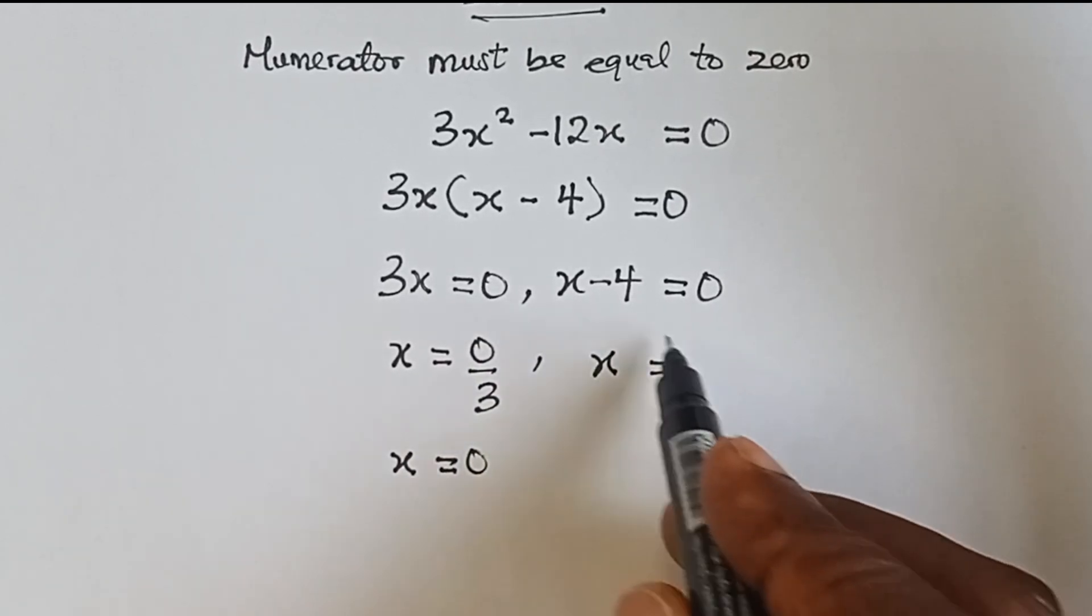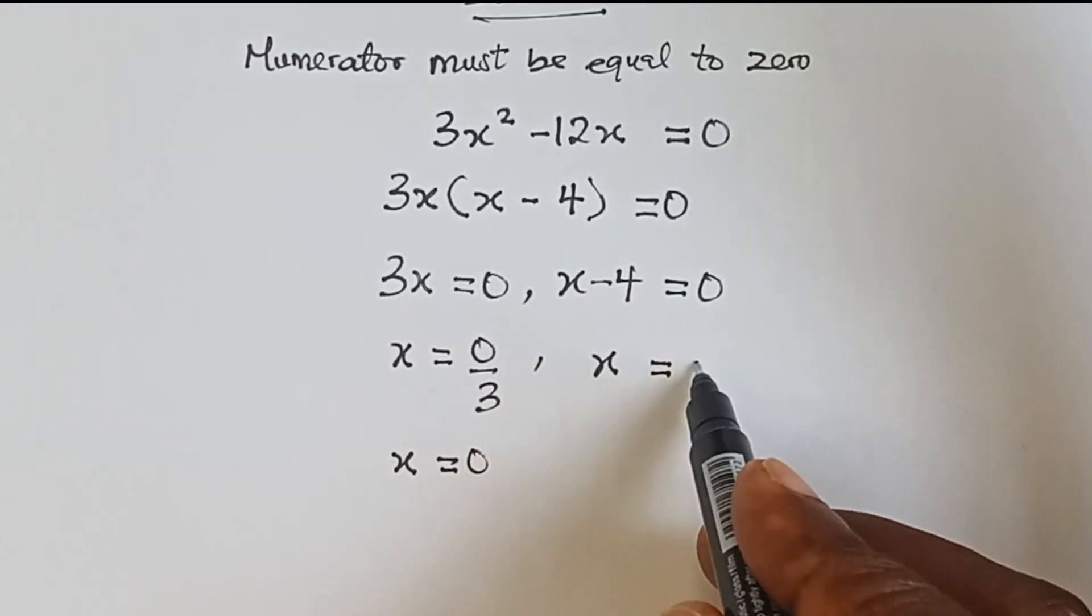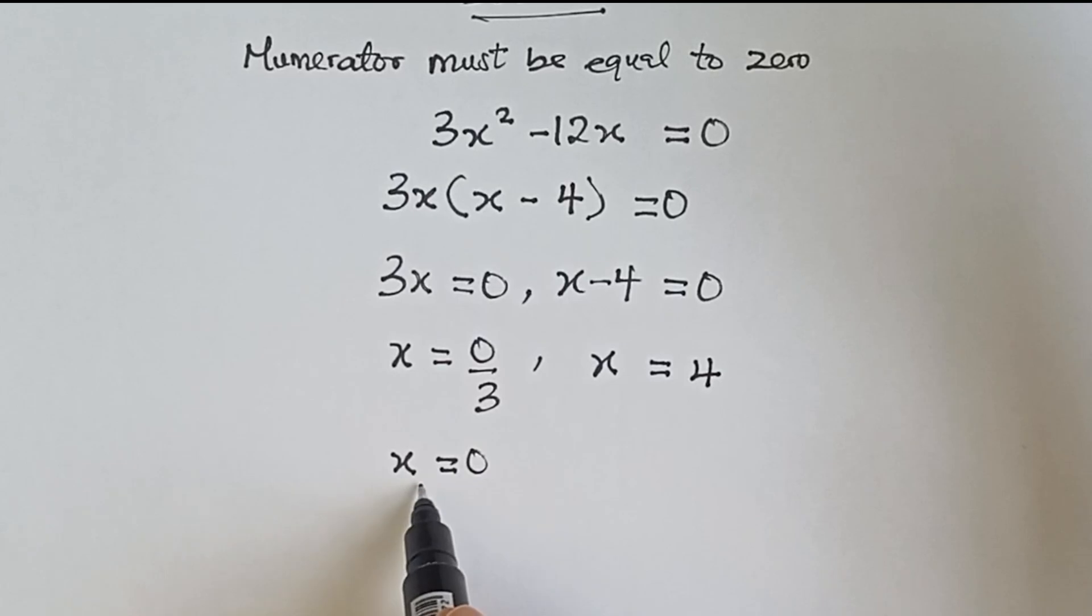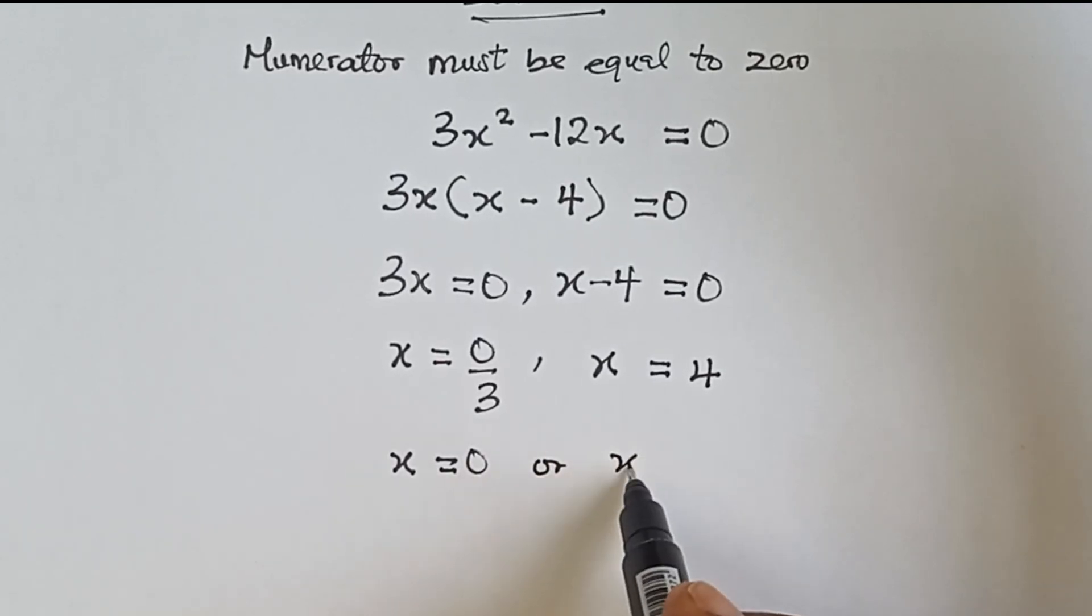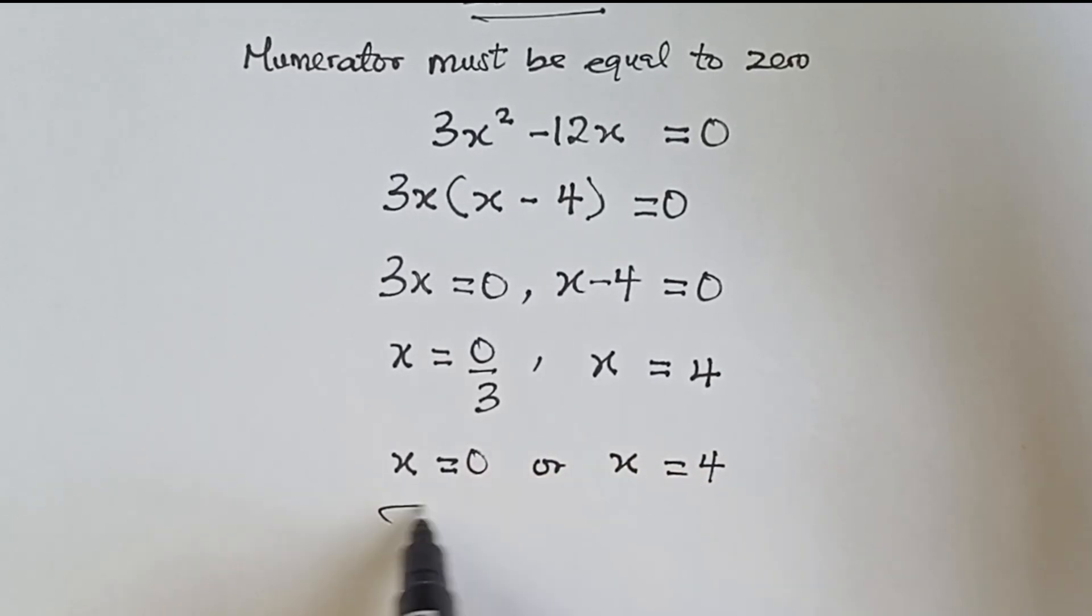X equals to, we bring this minus 4 to this side, it becomes plus 4. So x equals zero or x equals to 4. All right, so these are the values of x that will make this expression to be equal to zero.